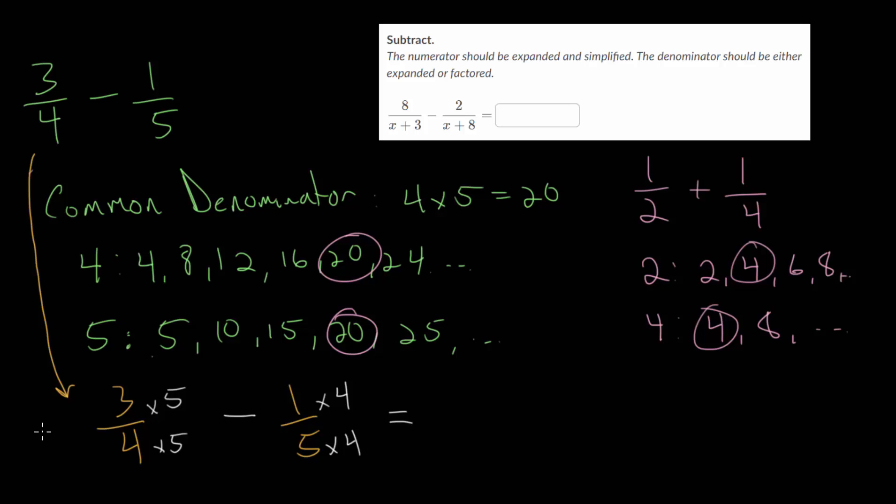And so for this first fraction, the numerator is now 15, and the denominator is 20. And for this second fraction, we have minus 4 for the numerator over 20 for the denominator. And once these denominators are equal, then you can carry out the subtraction across the top.